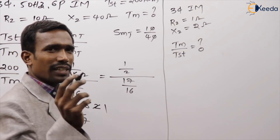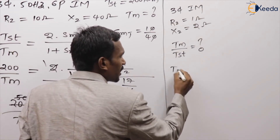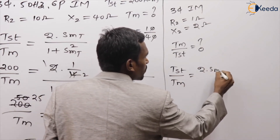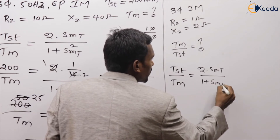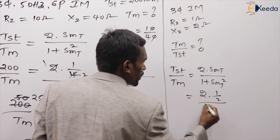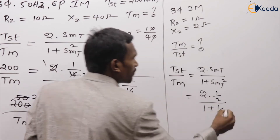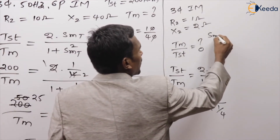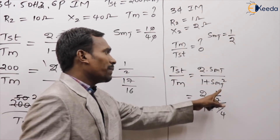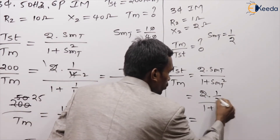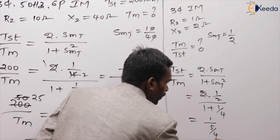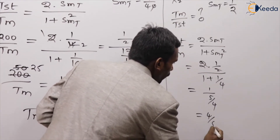Generally, people make the mistake of writing starting torque to maximum torque ratio instead. Using the formula: T_st/T_max = 2 × S_MT / (1 + S_MT²). S_MT = R/X = 1/2, so S_MT² = 1/4. Result: 2 × (1/2) / (1 + 1/4) = 1 / (5/4) = 4/5.